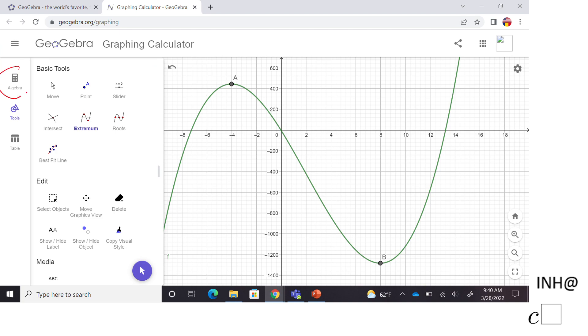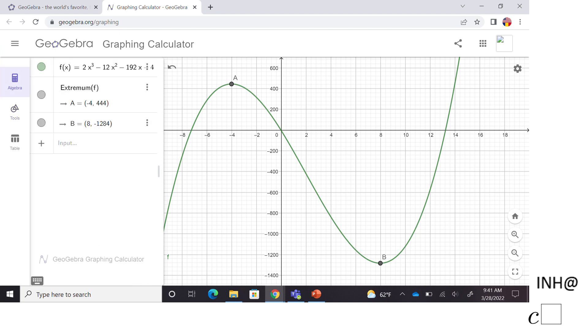If you want to see values, again you click on this Algebra and you see that we have a relative maximum at negative 4. That relative maximum is 444, that is the y value. Very similar, we have a critical point, a relative minimum at x equals 8, and that value is negative 1284. The first one is x, the second one is y or the value of the function.